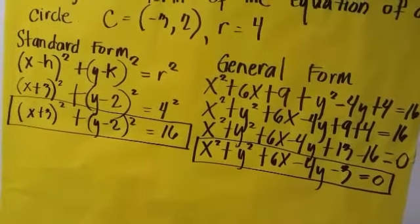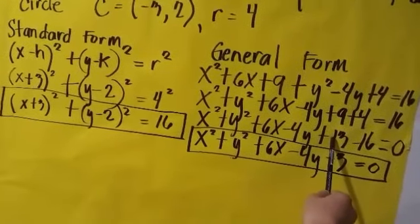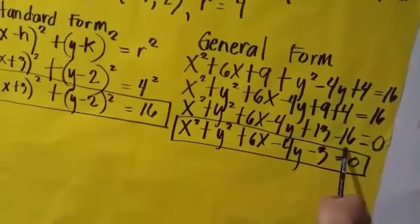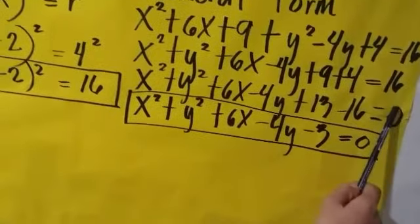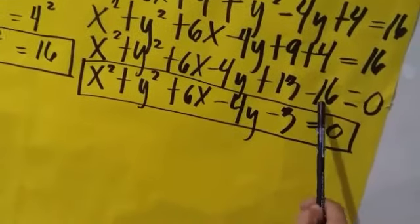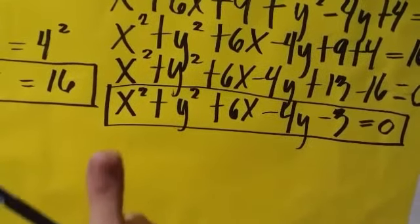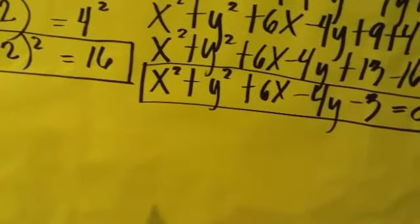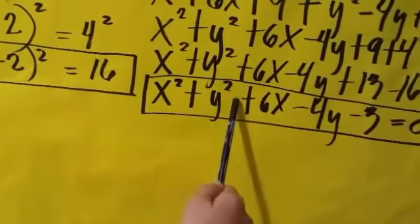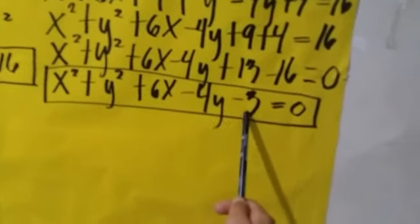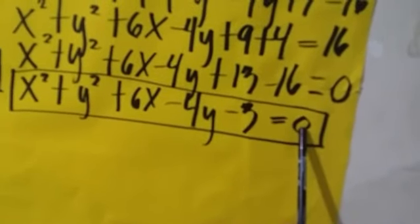And if you are wondering, it is 13 because I will just simply add 9 and 4, and why 16, because if we transfer a term across the equal sign, it will change its sign. Now, it will become x squared plus y squared plus 6x minus 4y minus 3 equals 0.